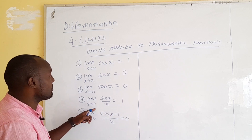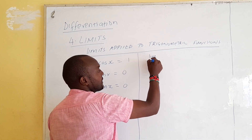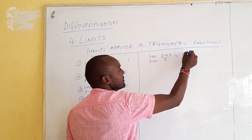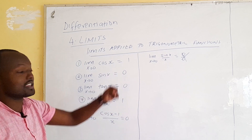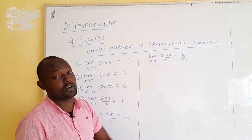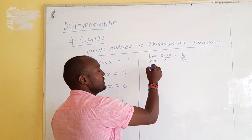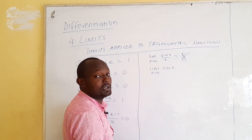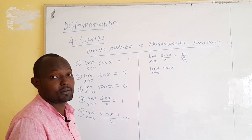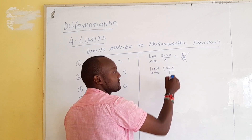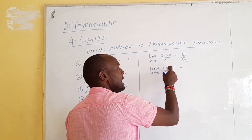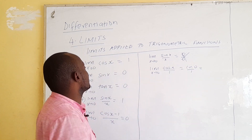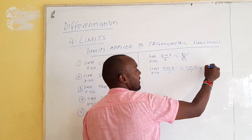For the limit as x approaches 0 of sin(x)/x, direct substitution gives 0/0 which we cannot solve directly. But we can apply L'Hôpital's rule, where we differentiate both numerator and denominator. The derivative of sin(x) is cos(x), and the derivative of x is 1. So we get cos(0)/1.